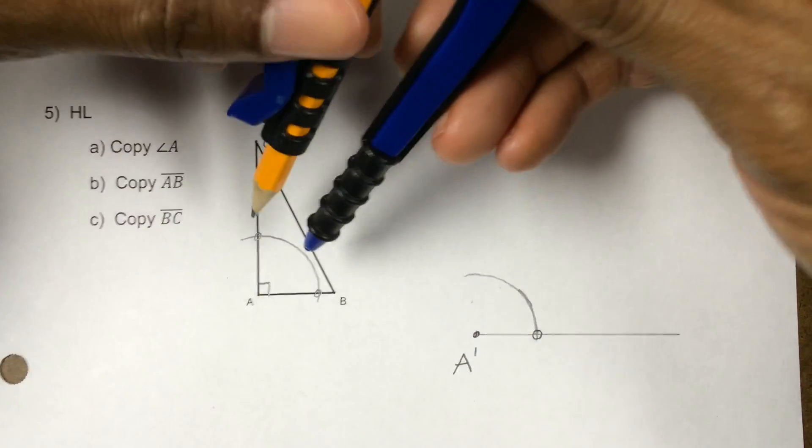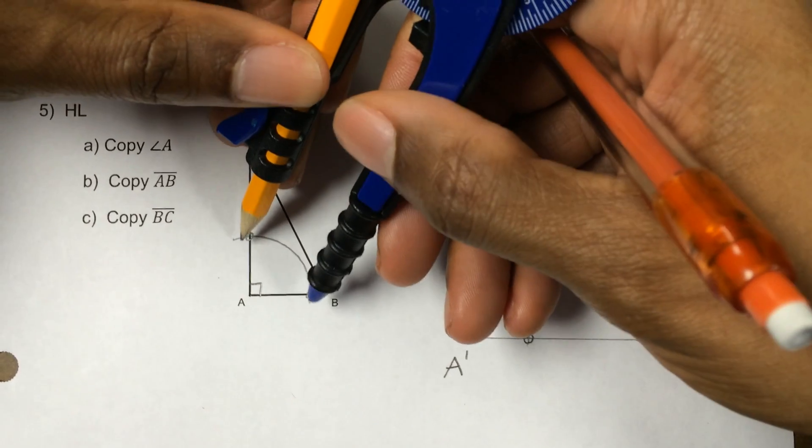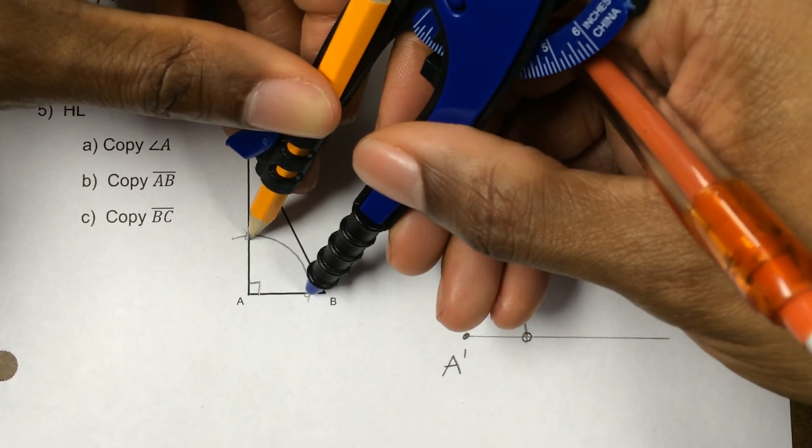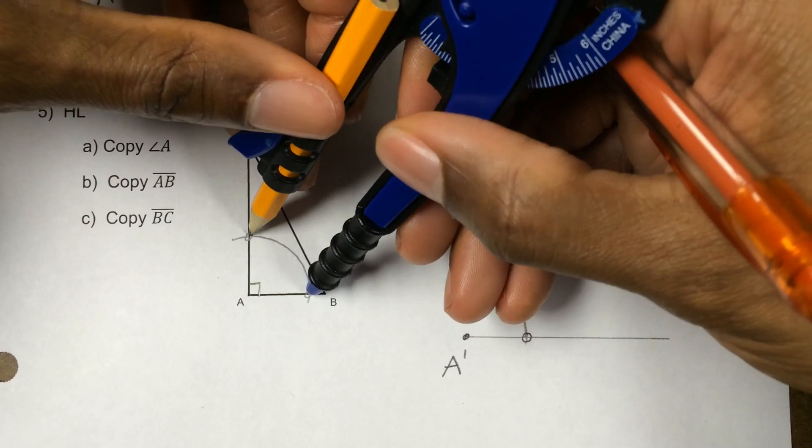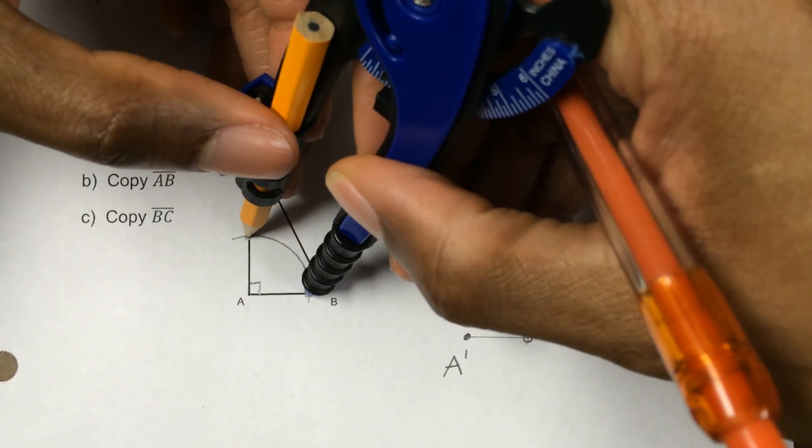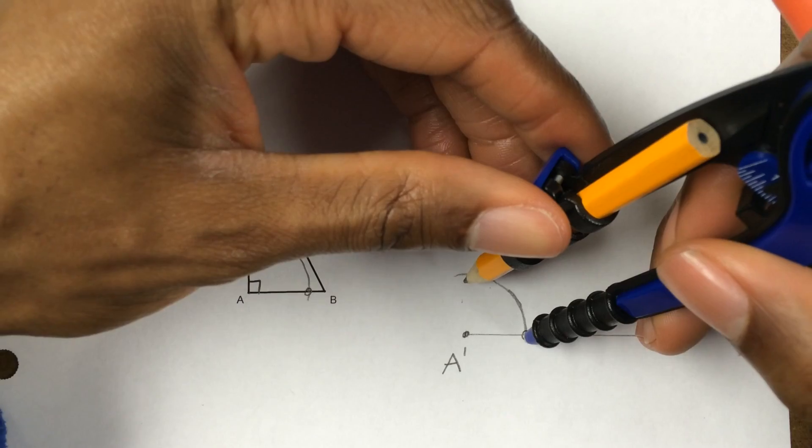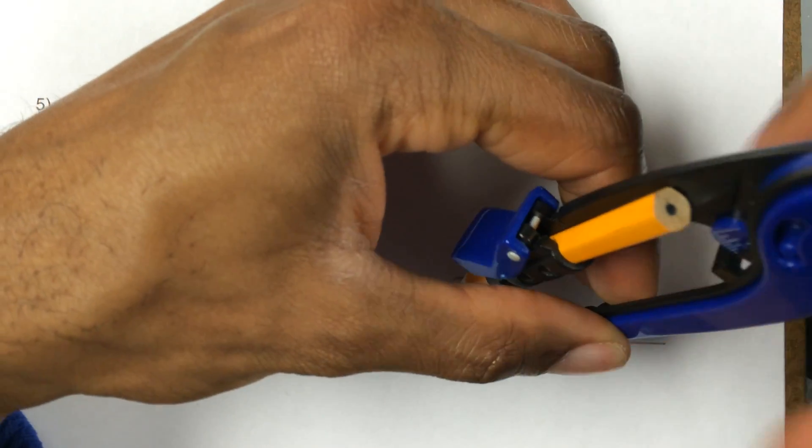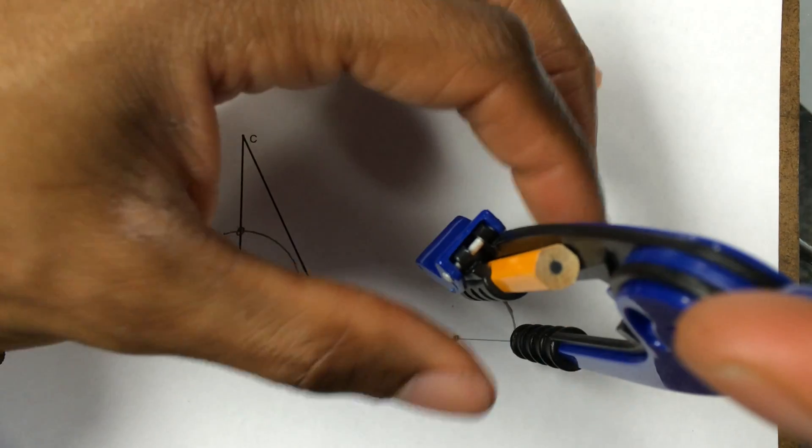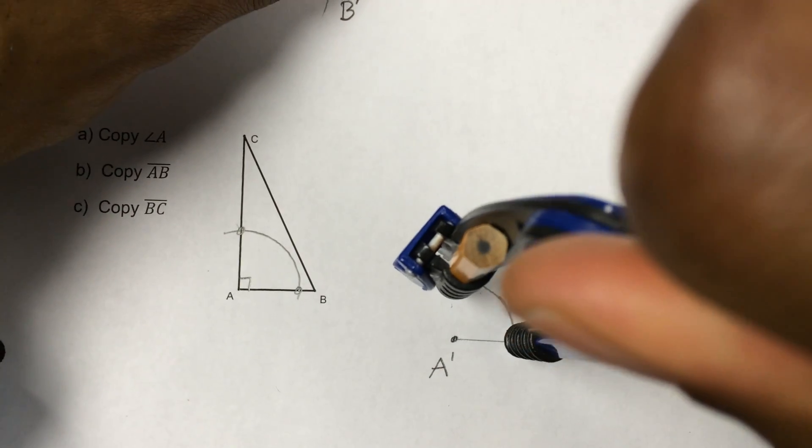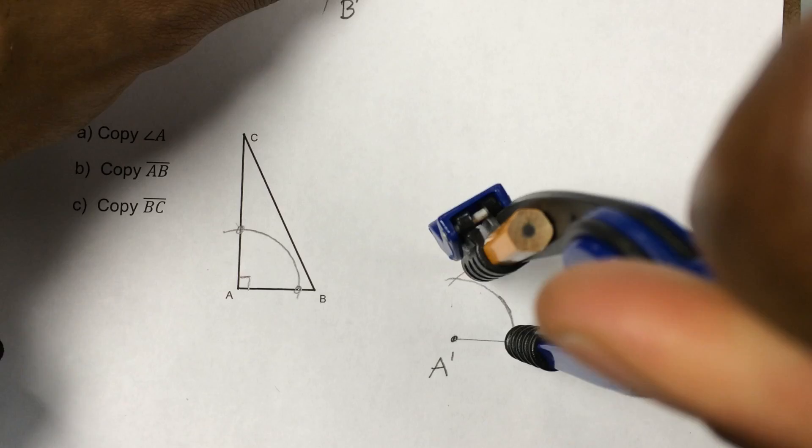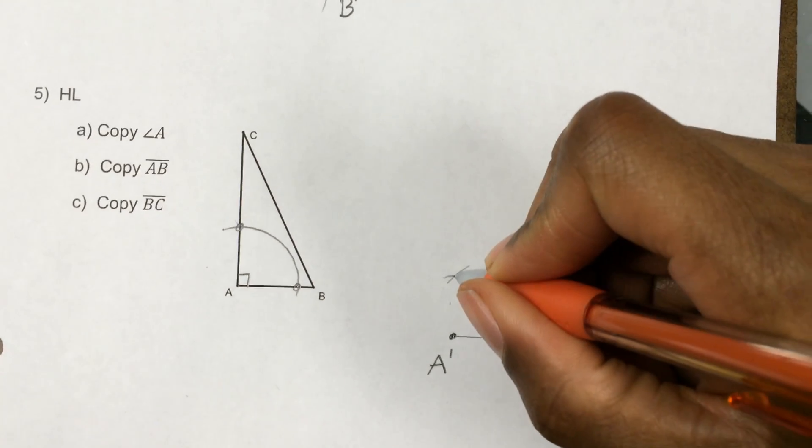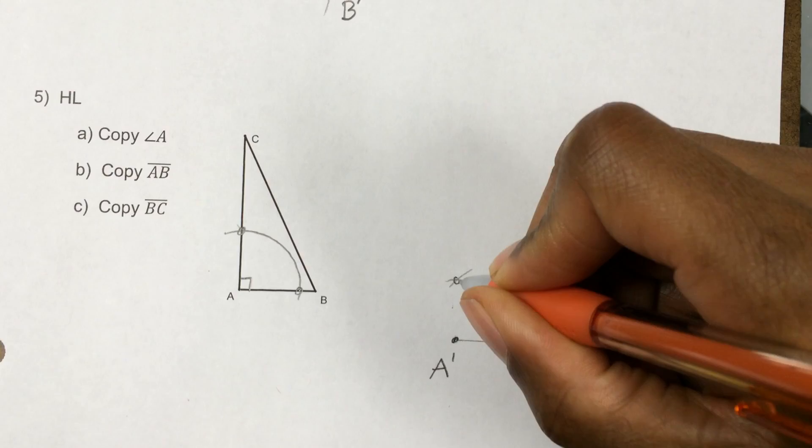To know exactly where it's going to be, I need to use my compass again to measure this distance. OK, this distance goes from here to here. So now I'm going to duplicate that distance, like so.